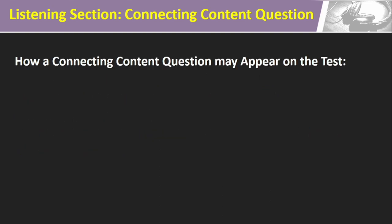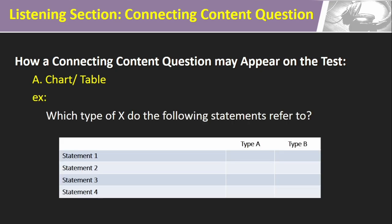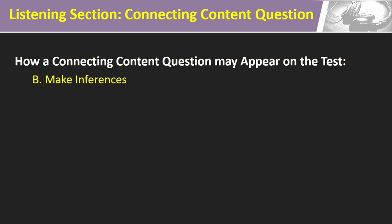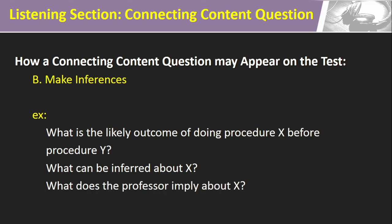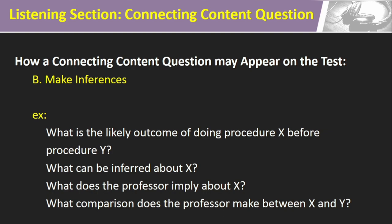Connecting Content questions have two formats. The first format appears as a chart or table. It will have four sentences or phrases, and you have to match them with a theme, idea, cause, effect, object, or individual. It may appear on the test like this: 'Which type of X do the following sentences refer to?' Other Connecting Content questions ask you to make inferences based on relationships mentioned in the passage. These may appear as: 'What is the likely outcome of doing procedure X before procedure Y?' 'What can be inferred about X?' 'What does the professor imply about X?' or 'What comparison does the professor make between X and Y?'